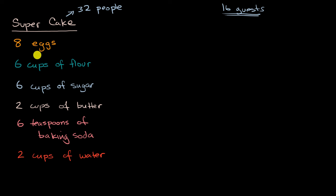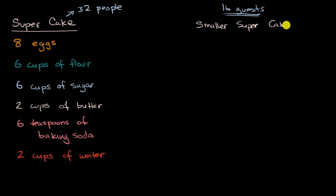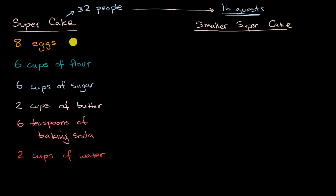How much of each of these ingredients should you have? I encourage you to pause the video and think about it. All right, so right now we're gonna think about this — we're gonna have a slightly smaller super cake. And you might have reasoned that if we're going to have half as many guests, then each of the ingredients we should just have half as much. And you would be right.